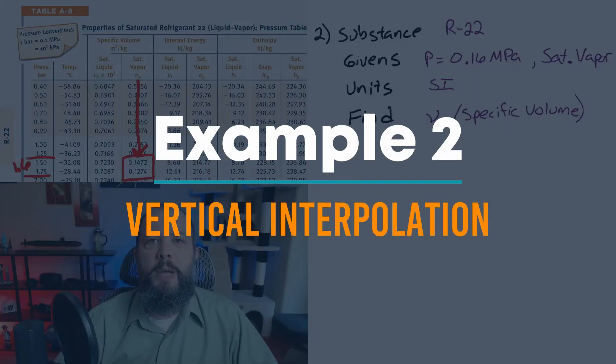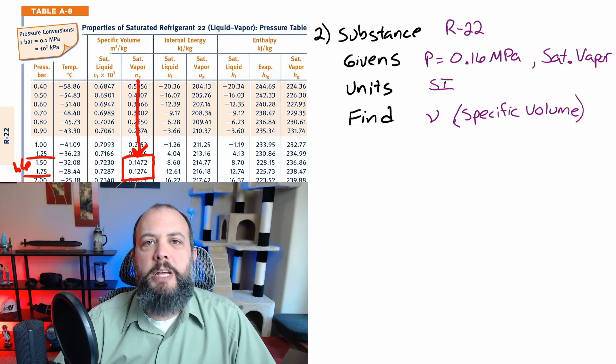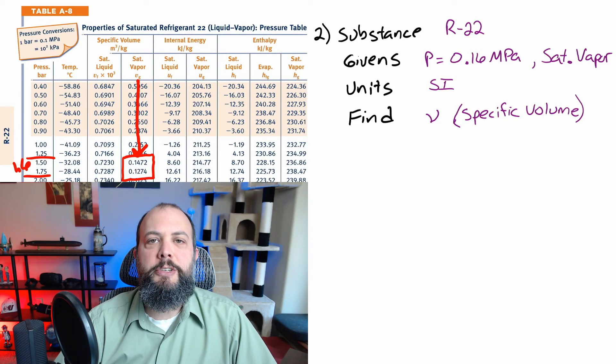We're still in SI units so when you go back to your tables make sure you're still in the SI units section. But this time we have a different substance. Refrigerant R22. So make sure you're still not looking at water. Make sure you switch over to an R22 table.